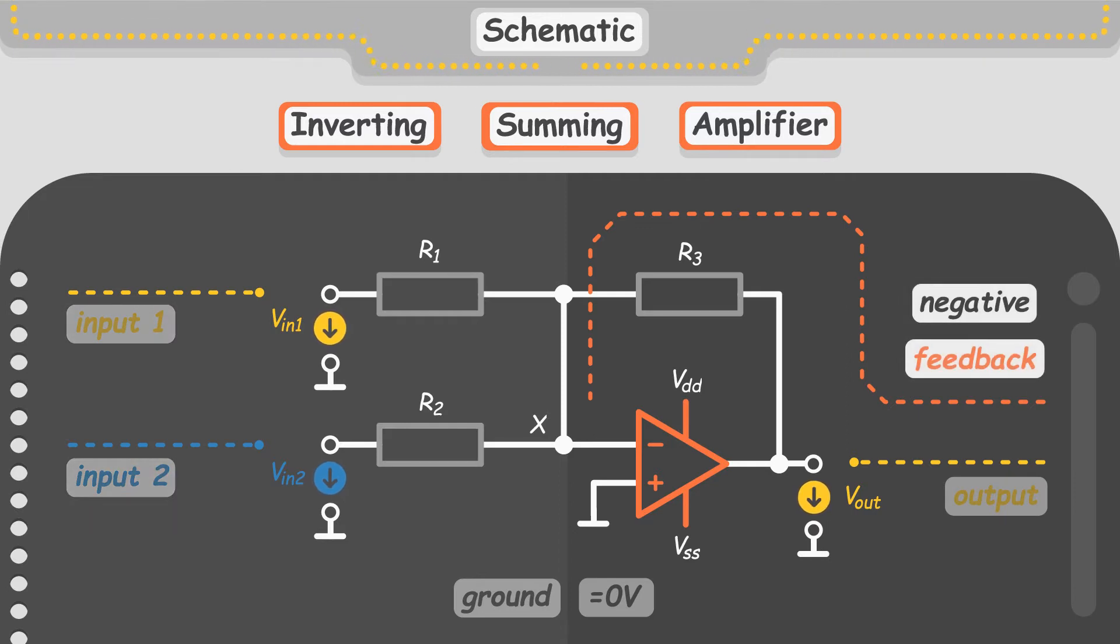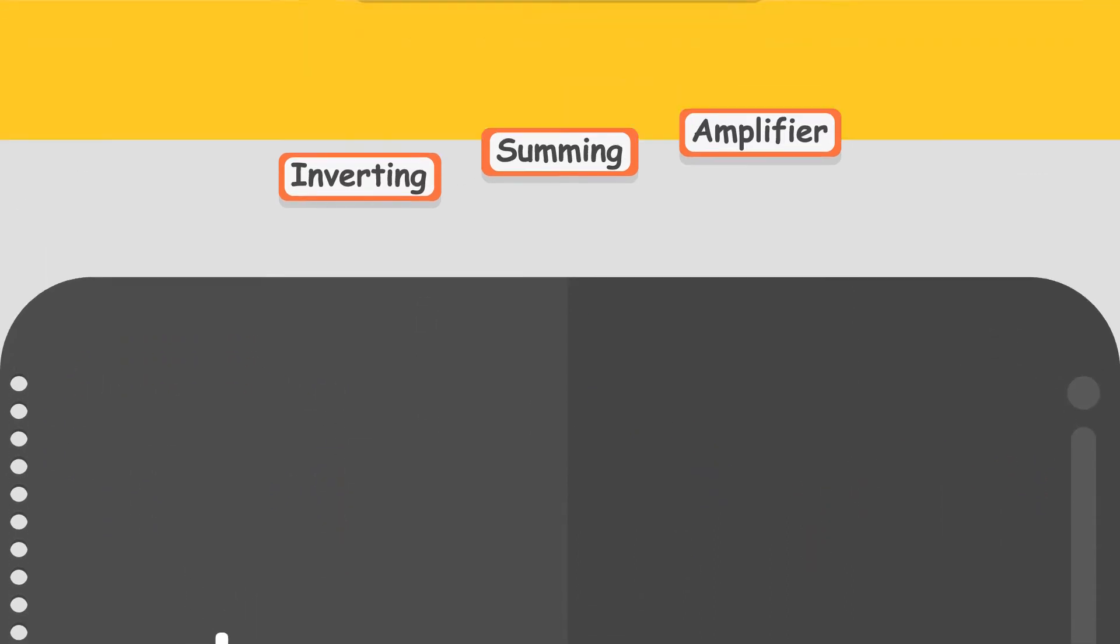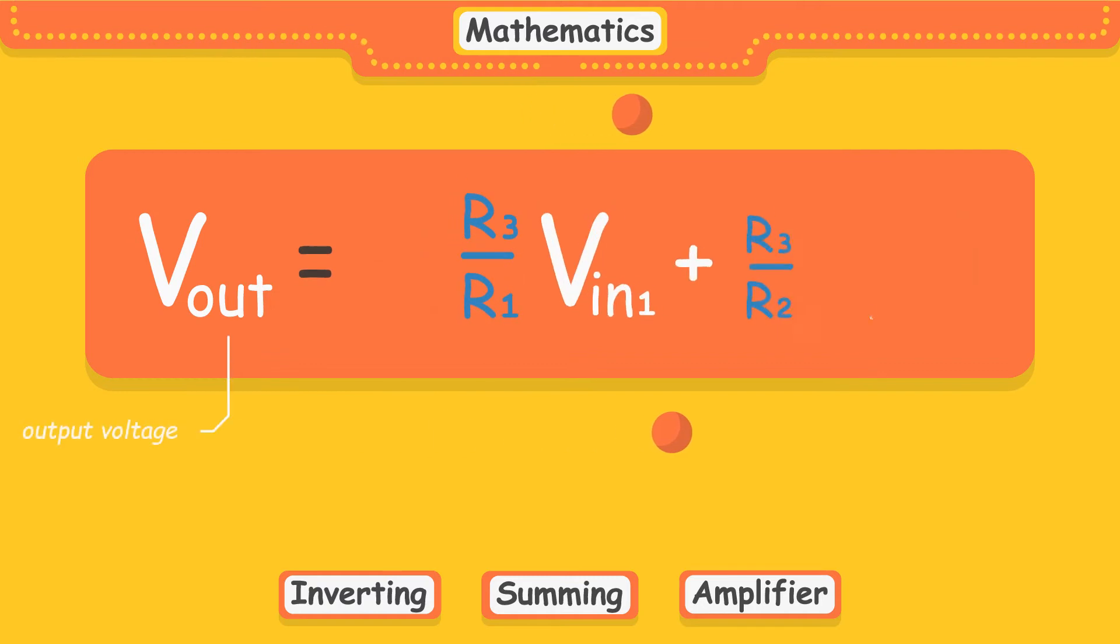Providing negative feedback makes the potential at the node X equal to ground. This is referred to as the golden rule of op amps, and it's very important, because it gives the circuit its arithmetic functionality. Here is the equation describing the output voltage in dependence of the input voltages and used resistors.